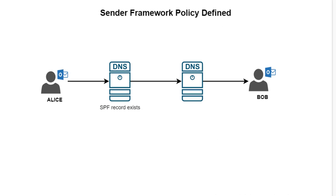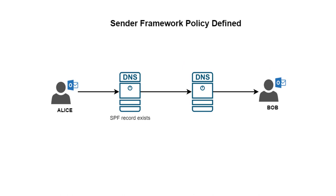Now let's take the other scenario where SPF is defined. Alice has SPF records defined on her DNS. She lists the allowed IP addresses that can send email on her behalf — and only those IP addresses. When Bob's server receives the message from Alice's server, he will ask for the SPF record.